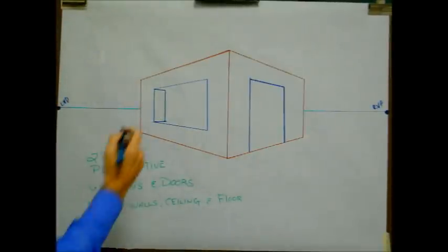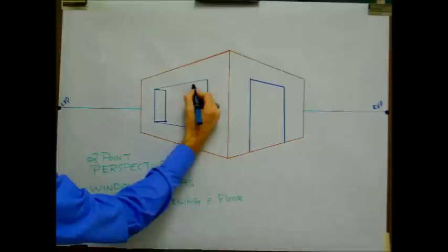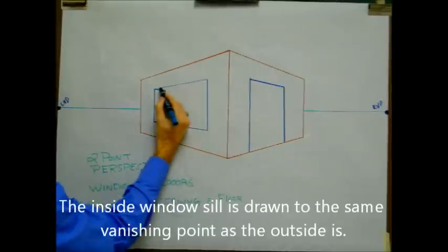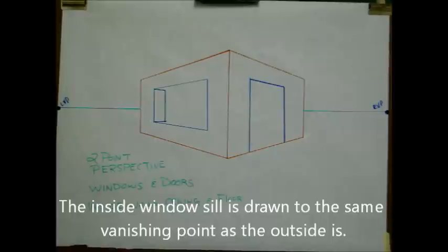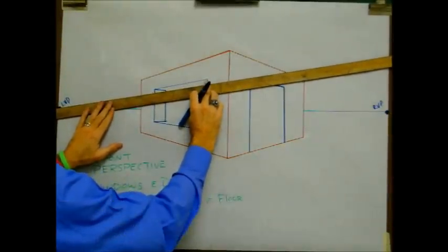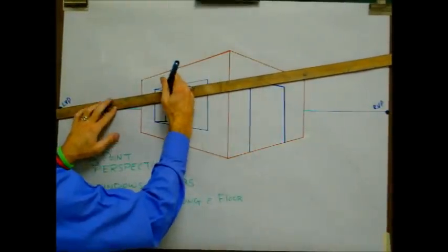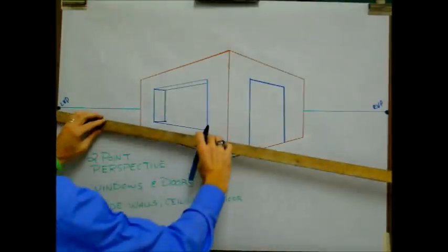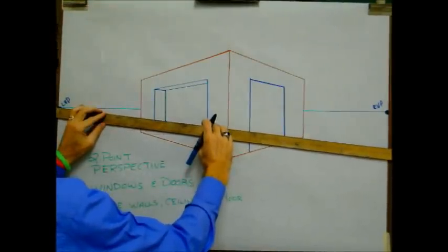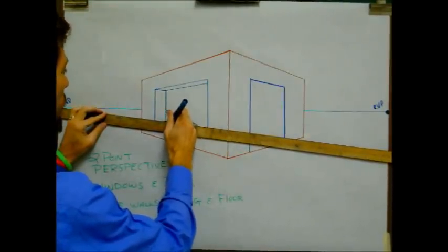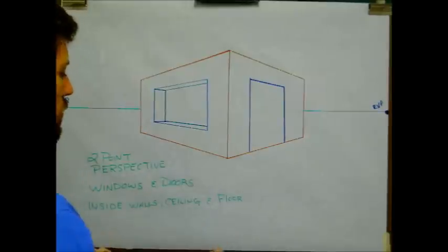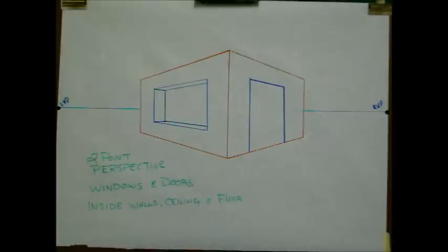This is where things get a little confusing. The top of the window sill should follow the same vanishing point as the outside top — so the inside top and outside top both follow the left vanishing point. Line it up and draw it in. And then the same for the bottom: left vanishing point, bottom back corner, draw that in. So now our building has a sense of thickness — that window is thick. Go ahead, pause here, and come back in a moment.